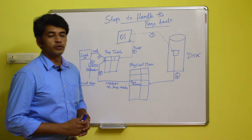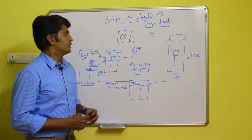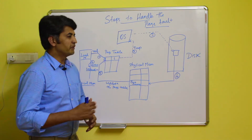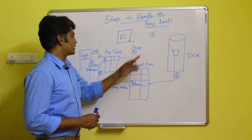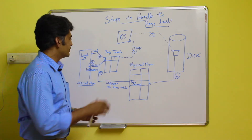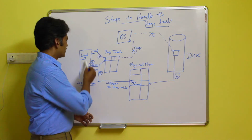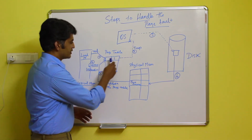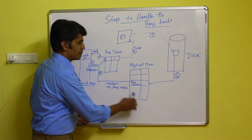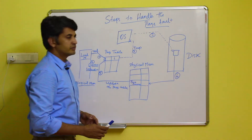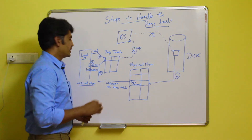In this video we are going to discuss how to handle the page fault. In the previous video we already discussed what a page fault is — it may also be called a trap. In this diagram, the components available are: logical memory, the page table, physical memory, disk, and the operating system.